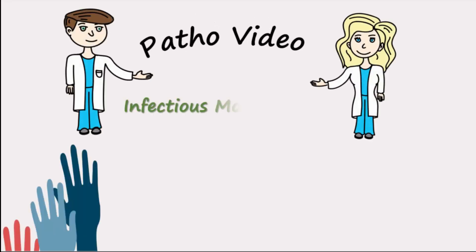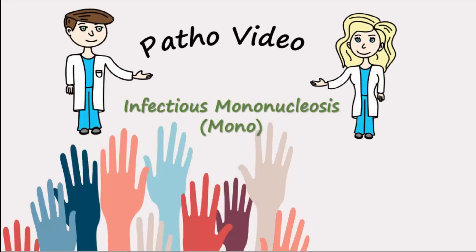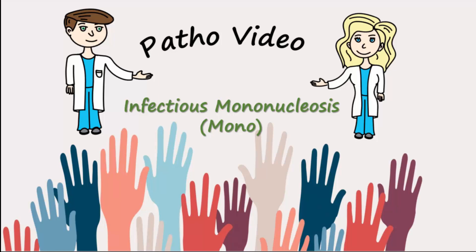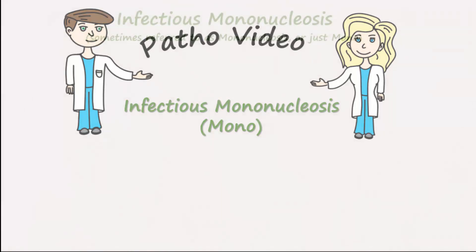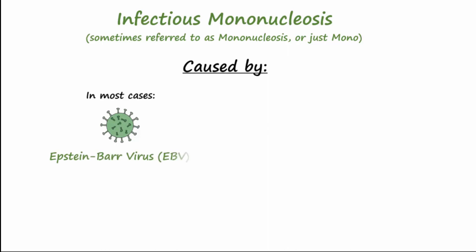Welcome to another patho video. Today's topic is infectious mononucleosis. In nearly all cases, the cause of mono is the Epstein-Barr virus, also known as herpes simplex 4. EBV has a double-stranded DNA genome.